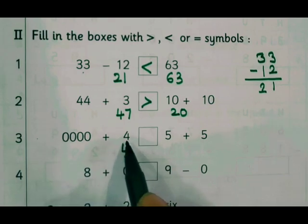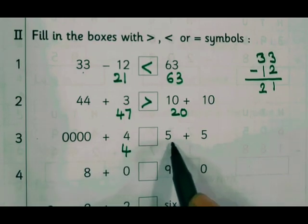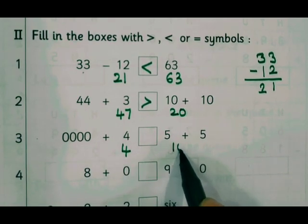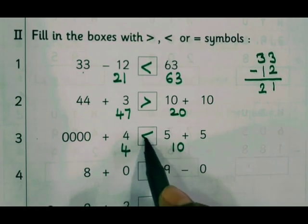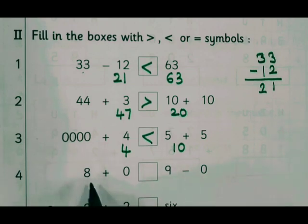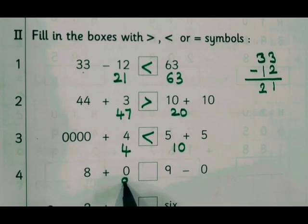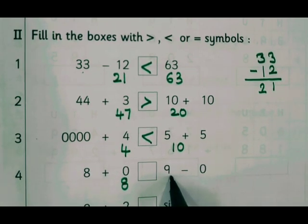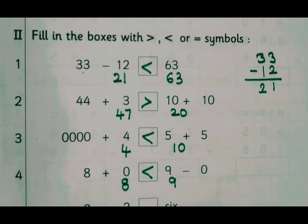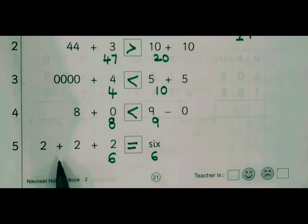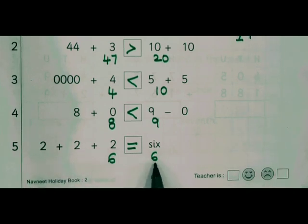Any number of zeros plus any number is the same number. 5 plus 5 is 10, so 4 is less than 10. 8 plus 0: any number plus 0. 8 plus 0 is 8, and this 6 is the same number. Therefore we use the equal sign here.